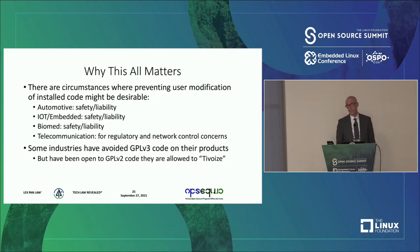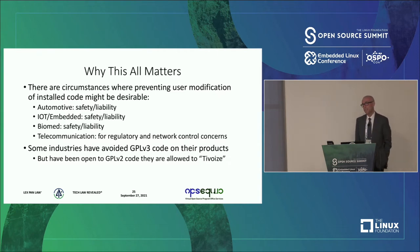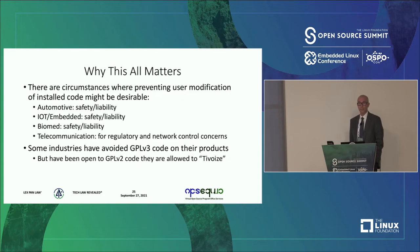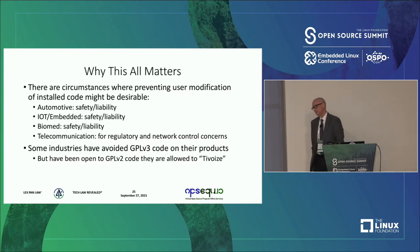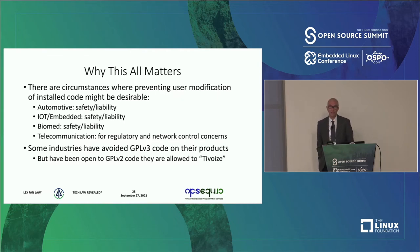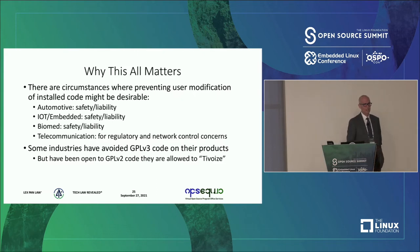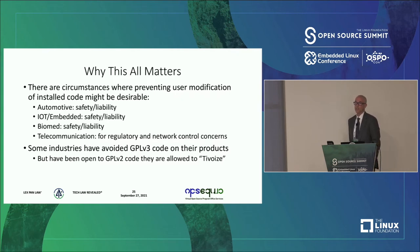Some of these industries have actually put in place policies that say: if we're going to install code on our devices, it shouldn't be GPL v3, because GPL v3 is going to require us to provide this installation information, and we don't want to do that. However, they say GPL v2 doesn't have that requirement — and in fact, the complaint about GPL v2 at the time was that people were able to Tivoize their code. So they say: I'm going to be willing to put GPL v2 code on my device because I don't believe I have an obligation to provide the installation information.